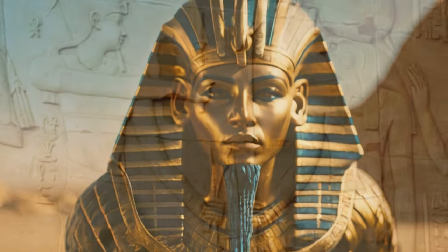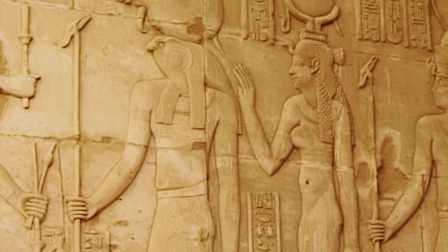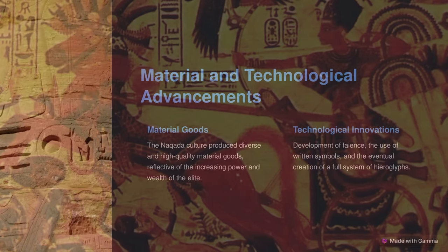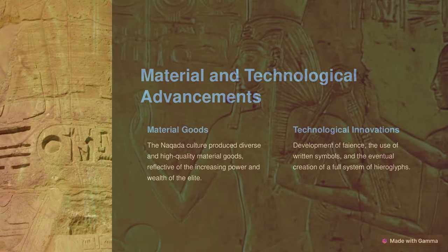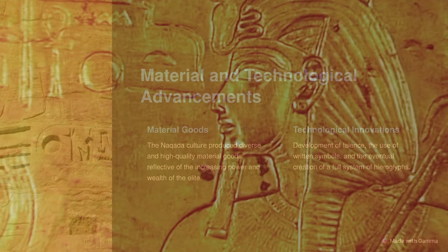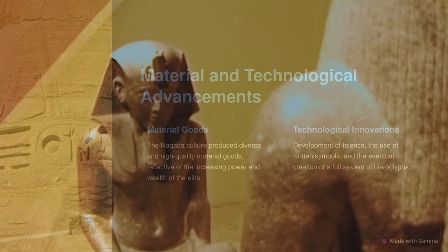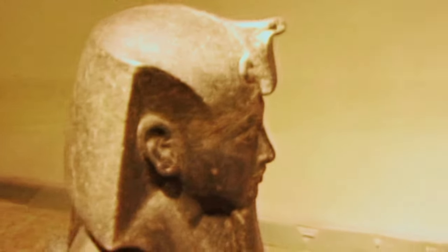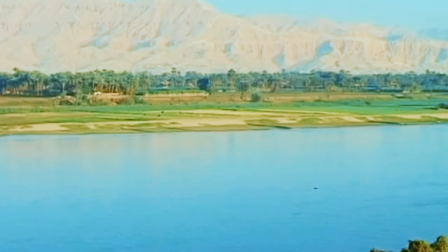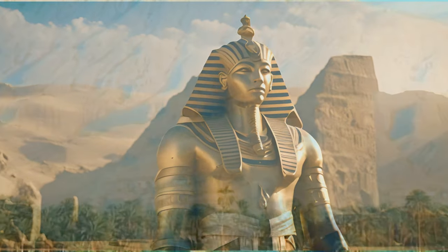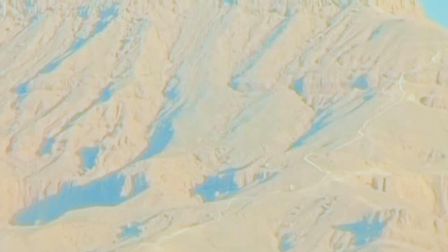Periodic leaders expanded their control of Egypt northwards along the Nile. They also traded with Nubia to the south, the oases of the western desert to the west, and the cultures of the eastern Mediterranean and Near East to the east. The Naqada culture manufactured a diverse selection of material goods, including combs, small statuary, painted pottery, high-quality decorative stone vases, cosmetic palettes, and jewelry made of gold, lapis, and ivory. They also developed a ceramic glaze known as faience, which was used well into the Roman period to decorate cups, amulets, and figurines. During the last pre-dynastic phase, the Naqada culture began using written symbols that eventually were developed into a full system of hieroglyphs for writing the ancient Egyptian language.